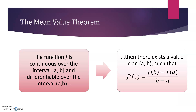Here's what the Mean Value Theorem says: if a function f is continuous over a closed interval and differentiable over the open interval, then there exists a value c on the open interval such that the derivative at c equals the average rate of change over [a, b]. In the real world, if I drove to school and my average speed was 40 miles per hour, you can say with certainty that there was some moment on my drive when I was going exactly 40 miles per hour — and that's because of the Mean Value Theorem.